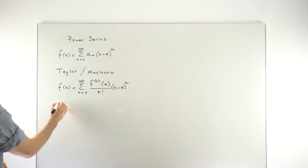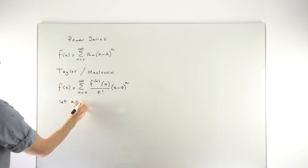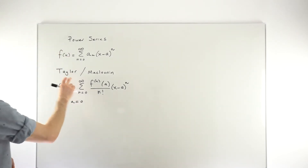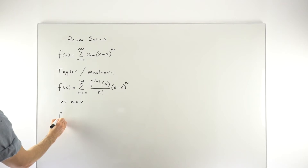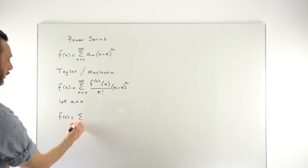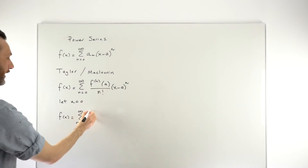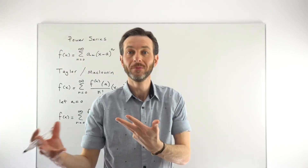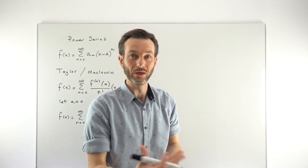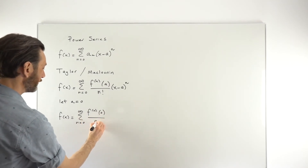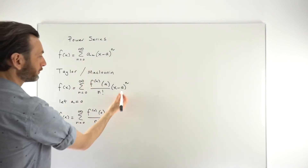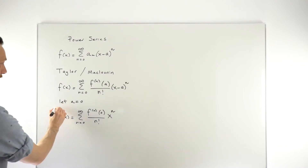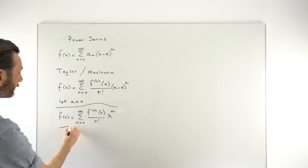A Maclaurin series is very similar to a Taylor series — it's just that we let a be 0. In other words, we're centering the series at 0. The center of a Taylor series is at a; the center of a Maclaurin series is 0. So f of x equals the sum from n equals 0 to infinity of the nth derivative evaluated at 0, divided by n factorial, times x to the power of n. Evaluating at 0 is generally easier because subbing in zero gives a lot of cancellation and simplification.